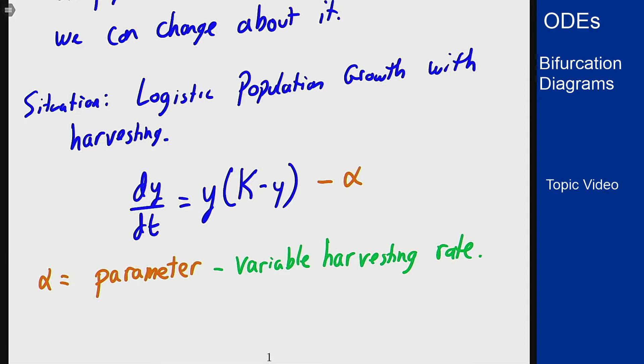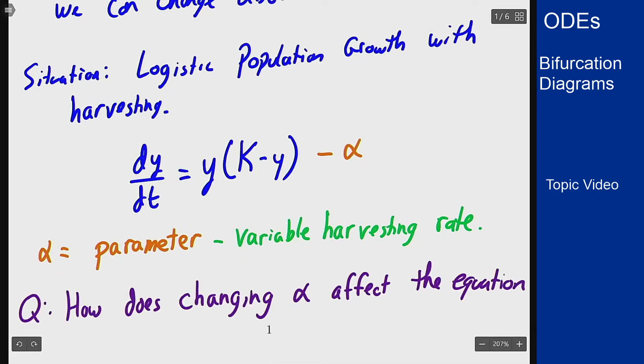The value of alpha is going to have some effect on the overall growth of this population. If we don't harvest at all we get a certain growth rate, but if we harvest way too fast it's going to kill off the entire population. We want to analyze how changing alpha affects the equation and its solutions, and that's what these bifurcation diagrams are trying to answer.